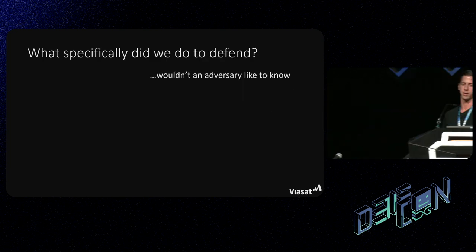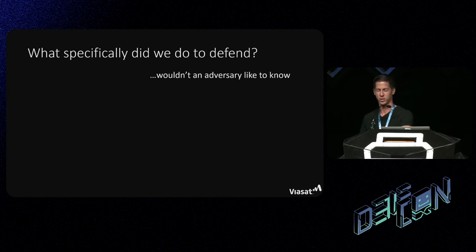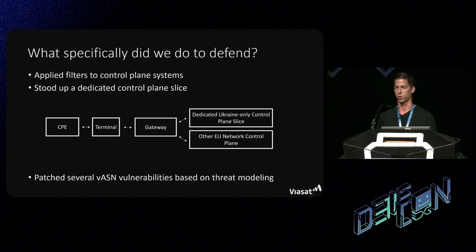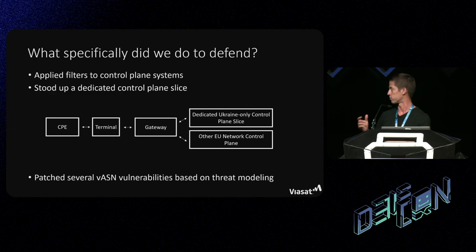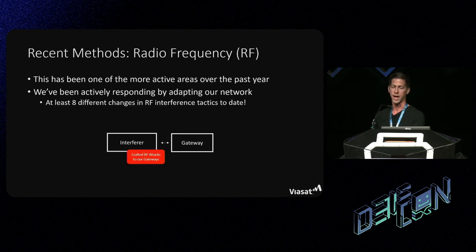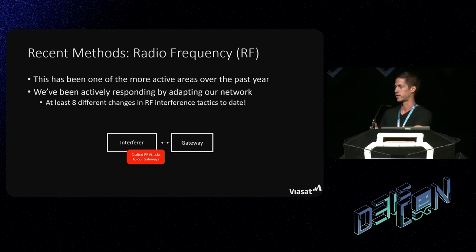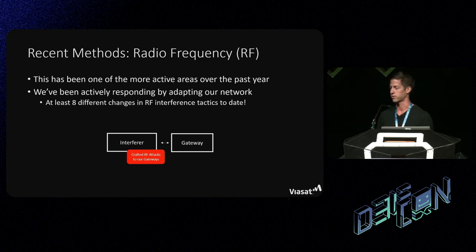What specifically did we do to defend? We quickly applied filters to control plane systems to intervene and disable these requests. We set up a dedicated control plane slice — engineers dedicated to a Ukraine-only control plane slice to keep it segmented from the rest of the networks on the fly. That was a proud moment when we had that new control plane slice online and dynamically responding to those addresses. We've also seen eight different changes of RF interference over the last year, so this has been a very active domain beyond just the cyber attacks.